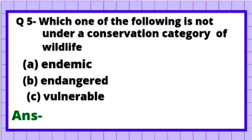Question 5: Which of the following is not under a conservation category of wildlife? Option A: Endemic, Option B: Endangered, Option C: Vulnerable. Endemic refers to a species limited to a particular area, and it is not necessarily endangered or extinct. Since endemic is not a risk-based conservation category, Option A is the correct answer.